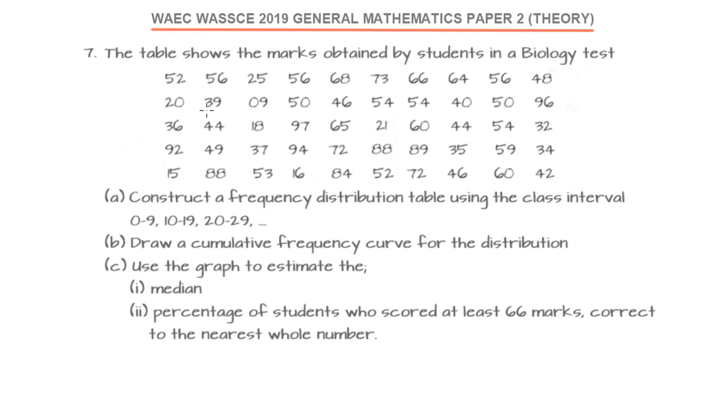This is a question on ungrouped data. The table shows the marks obtained by students in a biology test. We have to construct a frequency distribution table using the class interval 0 to 9, 10 to 19, 20 to 29, continuing to 30 to 39, 40 to 49, and so on. Let's go ahead with our first question there.